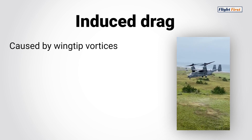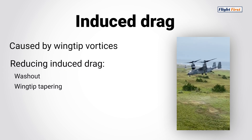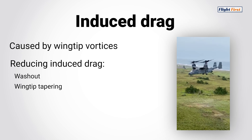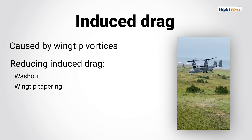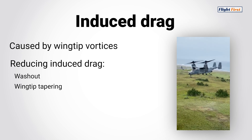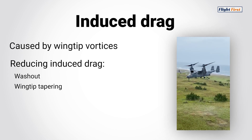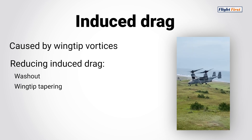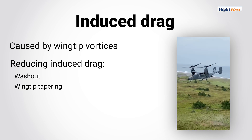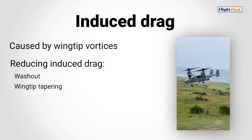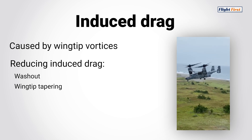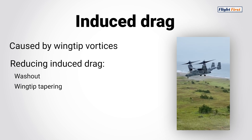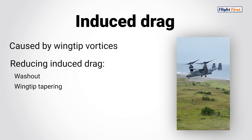Methods to reduce induced drag include washout and wingtip design or taper. Washout reduces the angle of incidence from root to tip, thereby reducing the potential angle of attack which causes wingtip vortices. With blade tapering, the blade's surface becomes larger from tip to root, providing a more evenly distributed lift production along the span of the rotor blade.